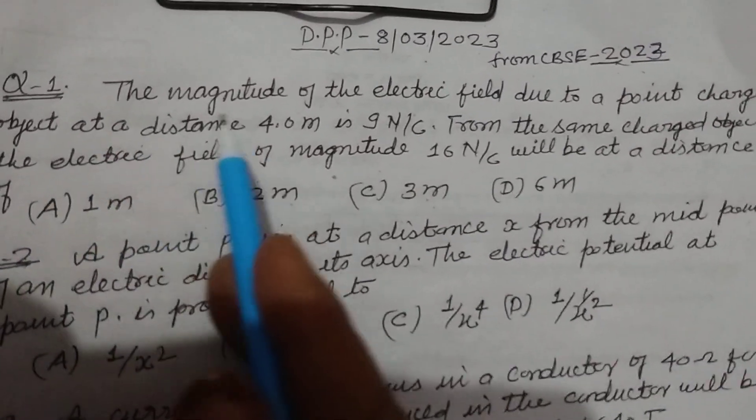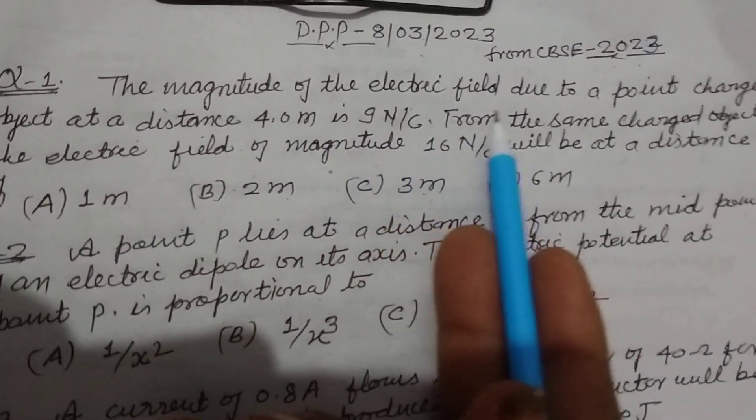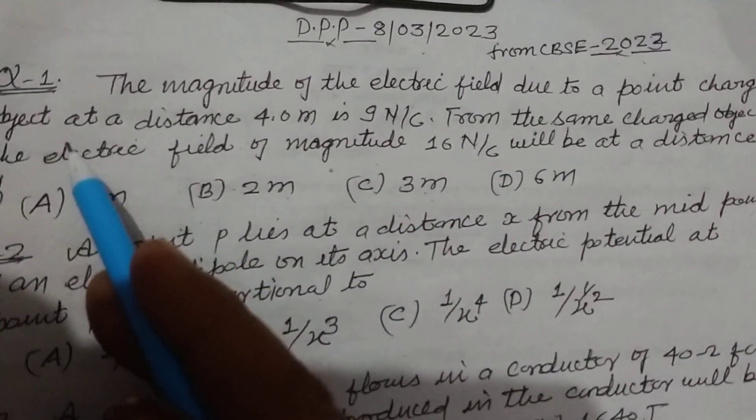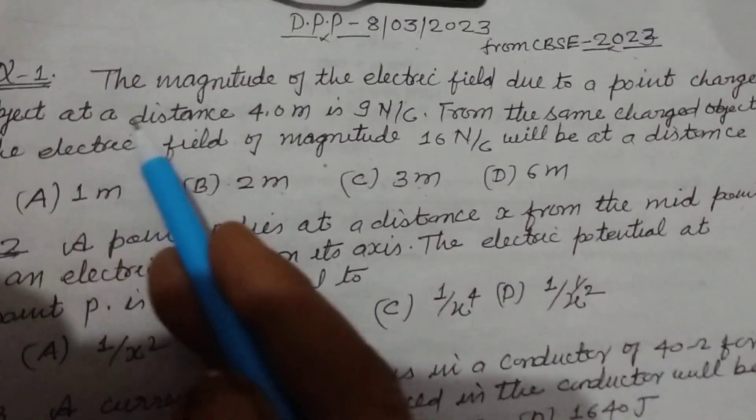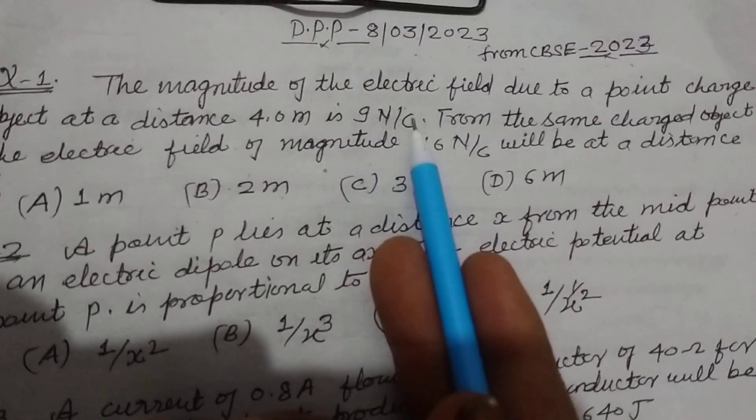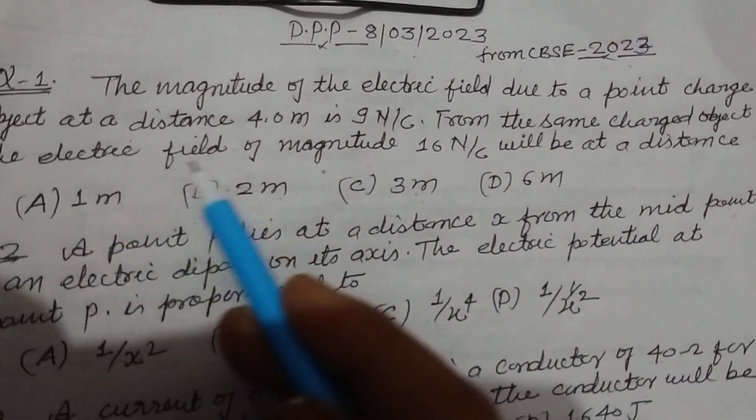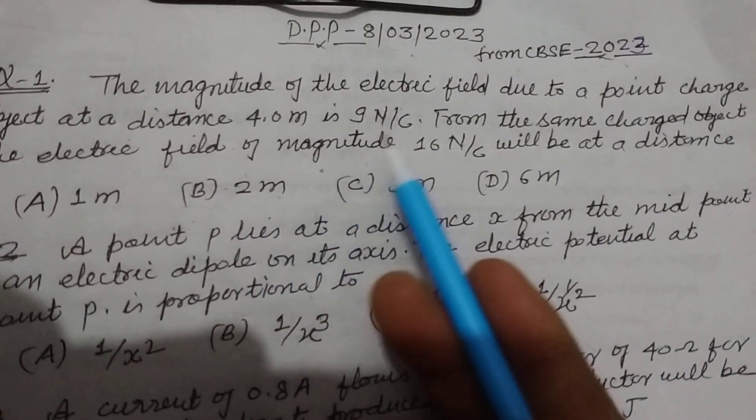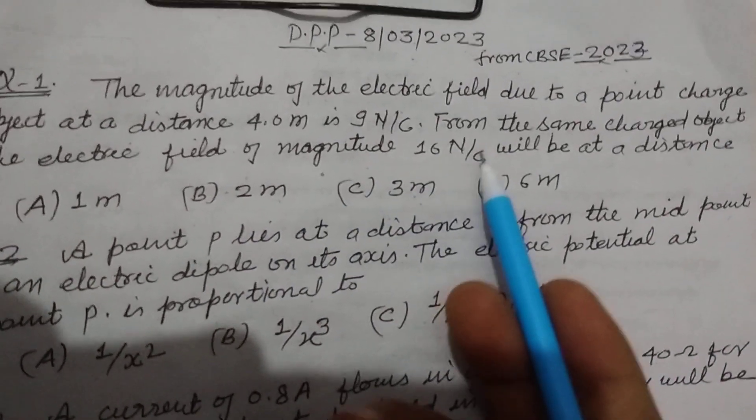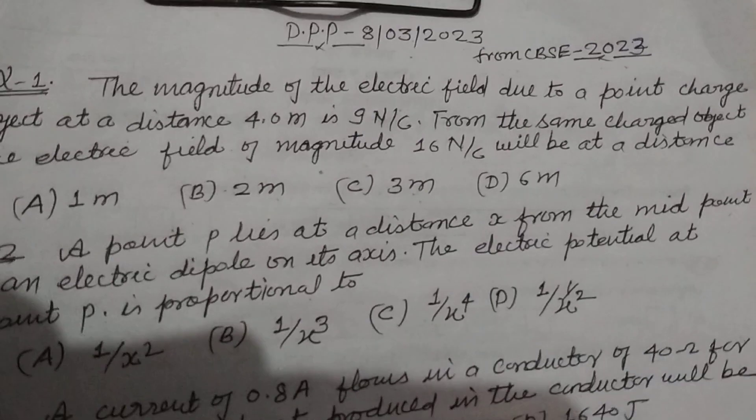The first question is: the magnitude of electric field due to a point charge object at a distance 4 meters is 9 Newton per coulomb. From the same charged object, the electric field of magnitude 16 Newton per coulomb will be at a distance of?